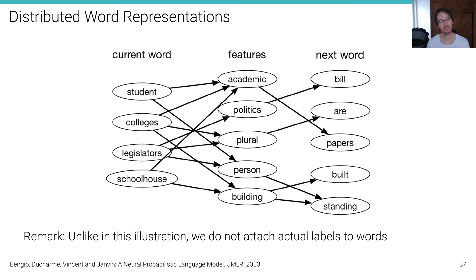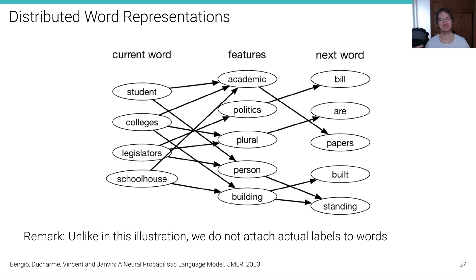Here's an illustration to give a feeling for why this is helpful — though unlike in this illustration, we don't actually attach labels to words. This is about semantic relatedness: a student is academic, colleges are academic, a schoolhouse belongs to academic, and academic is related to papers. So it's much more likely that any of those words are followed by 'papers' than by 'bill,' which is more related to legislators through a politics feature. We don't actually attach semantically meaningful labels — these are just real-valued vectors.